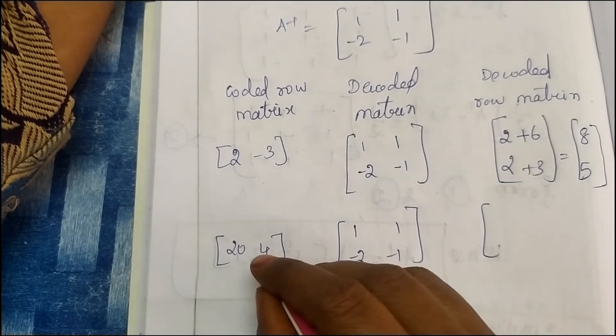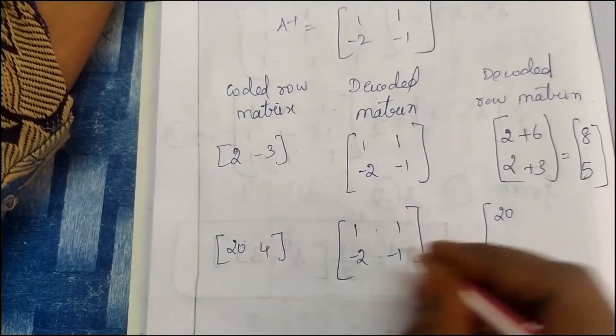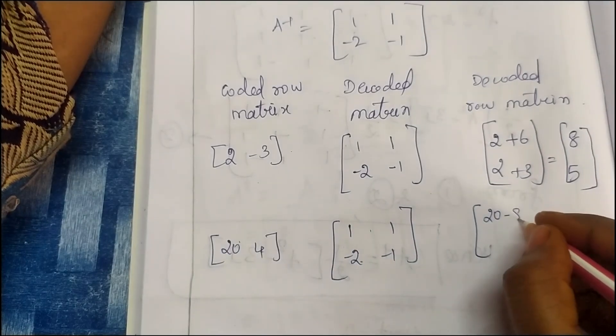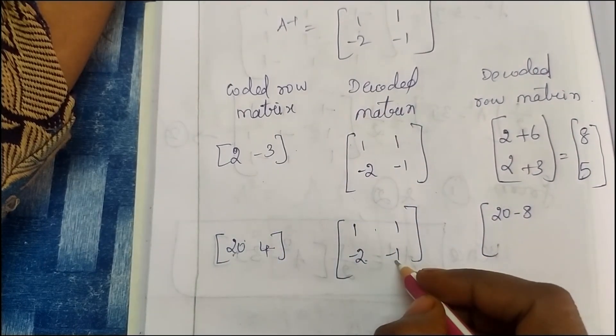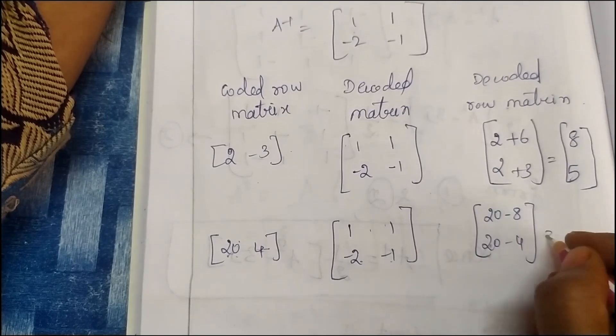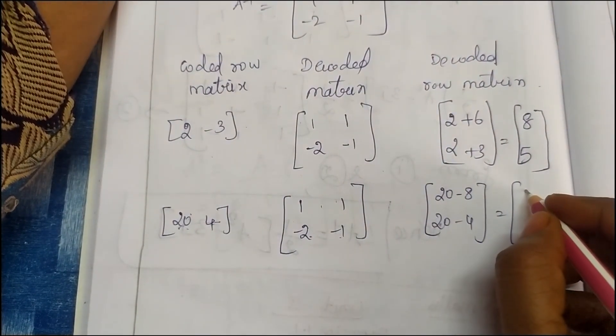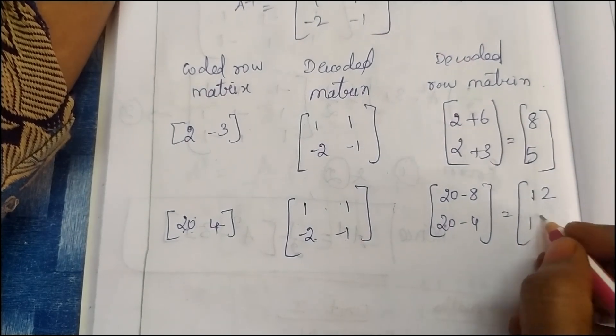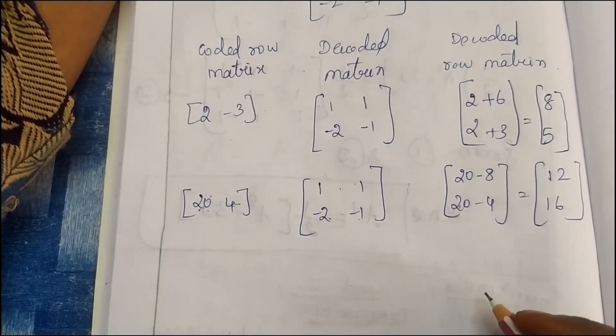Multiply by 20, 4. So 20 minus 8. Then first row, second column, 20 minus 4. Equal to the answer: 20 minus 8 is 12, 20 minus 4 is 16.